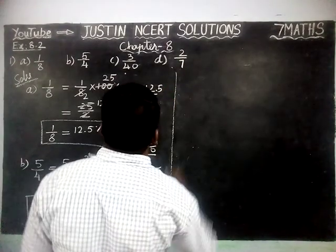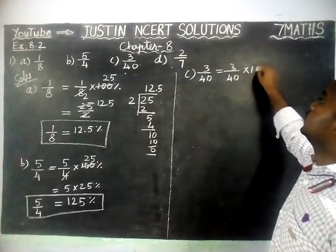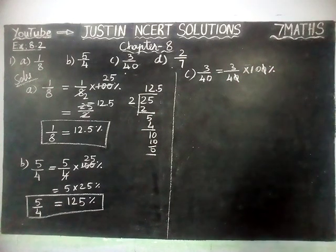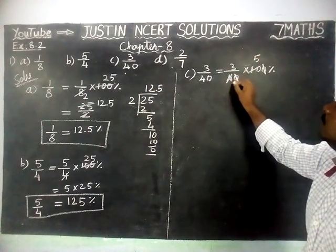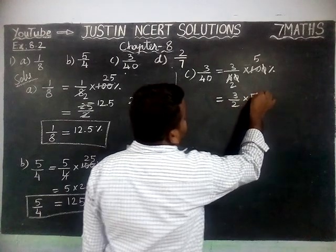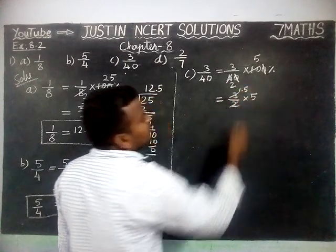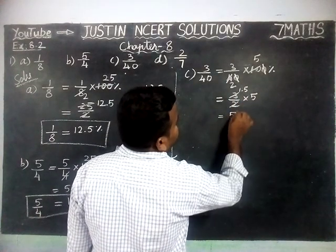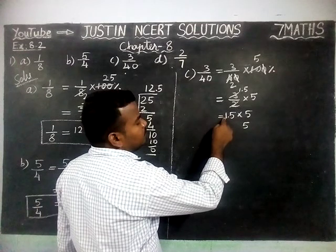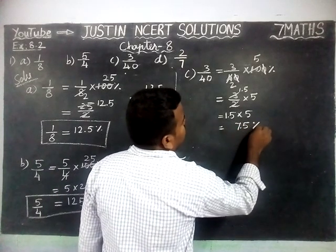Next, we are going to solve Part C. 3 by 40 is equal to 3 by 40 into 100 percent. Now we are going to simplify. The zeros get cancelled, and remaining we have: 5 twos are 10, 2 twos are 4. So we have 3 by 2 into 5. Simplifying: 1 two is 2, 1.5 twos are 3. So, 1.5 into 5: 5 fives are 25 remaining 2, 5 ones are 5, 5 plus 2 is 7. There is one decimal point, so we make one decimal point. So, 7.5 percent.